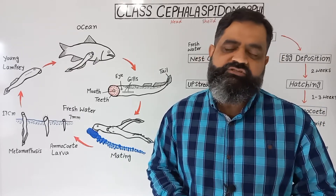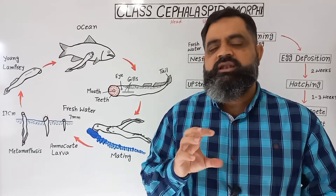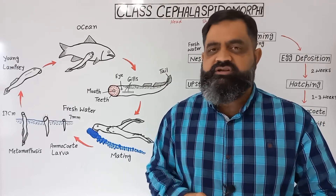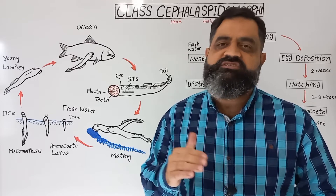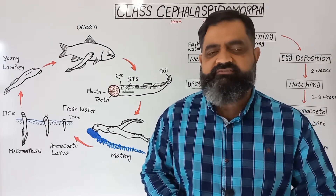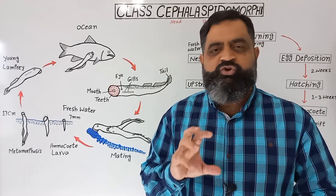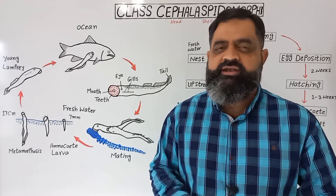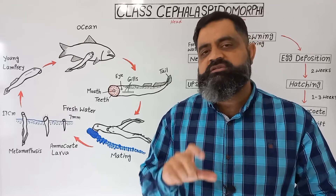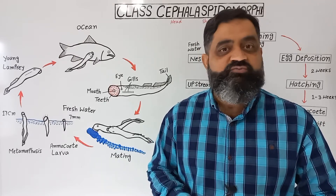After reaching 17 centimeters, the ammocoete larva undergoes a process known as metamorphosis. In this process of metamorphosis, the larvae develop internal and external gills, fins to aid movement — dorsal, ventral, and caudal fins — and a suctorial mouth with horny teeth. The larva then comes out from the sand and starts swimming towards sea water.